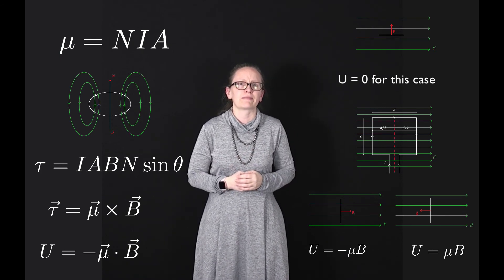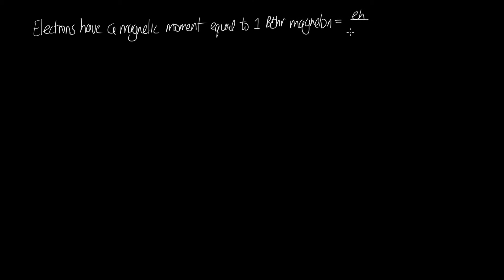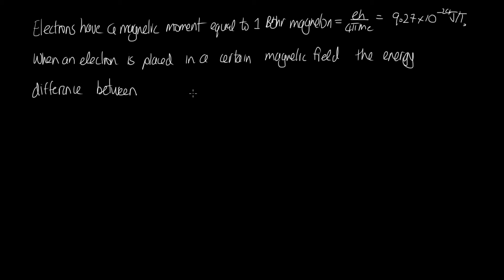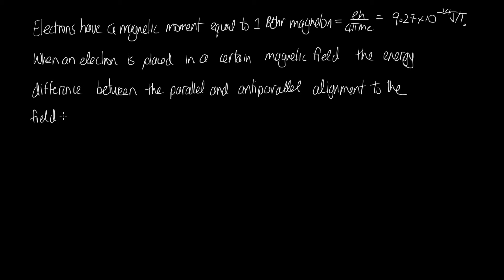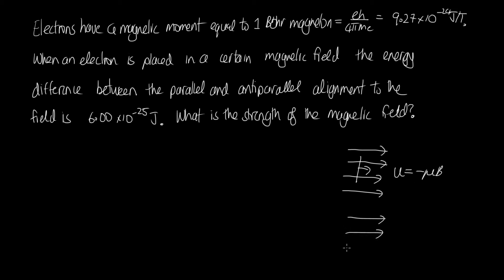Let's look at an example problem. Electrons have a magnetic moment equal to one Bohr magneton, which equals e·h over four pi times the mass of the electron, equal to 9.27 times 10 to the minus 24 joules per tesla. When an electron is placed in a certain magnetic field, the energy difference between the parallel and anti-parallel alignment to the field is 6.00 times 10 to the minus 25 joules. What is the strength of the magnetic field? We consider the energy difference between the two alignments. With the magnetic moment parallel to the field, the potential energy is minus mu·B.